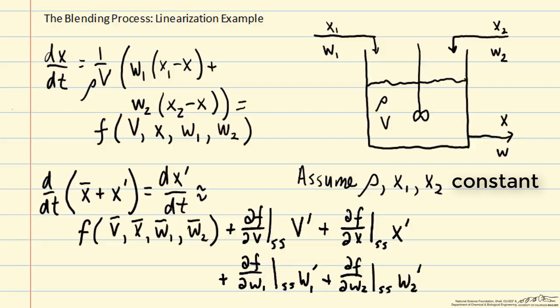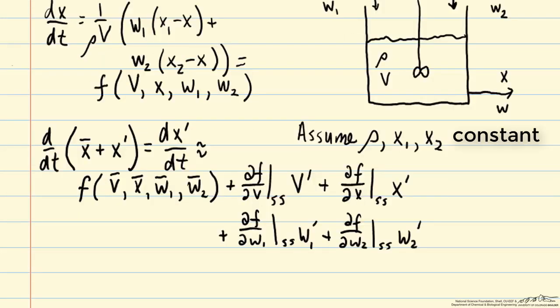One thing to notice here is that when we evaluate the derivative of f with respect to each of these independent variables, we are evaluating at the steady-state value, and those are going to be constant values. So the only time-varying quantities in this new model are associated with the deviation variables, and those all enter linearly. The reason that this model is going to be linear is because we're using only a first-order Taylor series approximation. If we wanted to be more accurate, we could include higher-order terms, but then we would be back to having a nonlinear model.